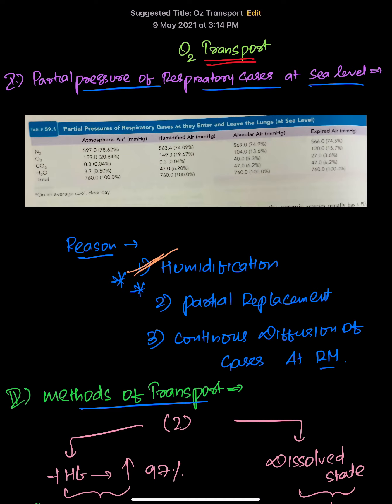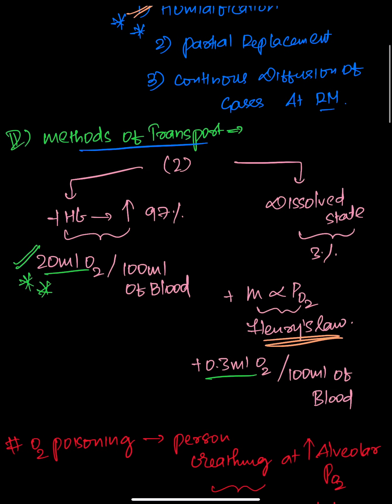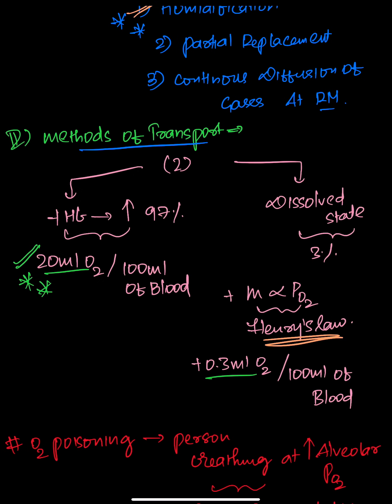Now coming to oxygen transport — its significance is that all metabolic activities of the cell depend upon oxygen, so every tissue and every cell requires it. Our body supplies oxygen in two methods: one is in the dissolved state, and the other is combined with hemoglobin as oxyhemoglobin.